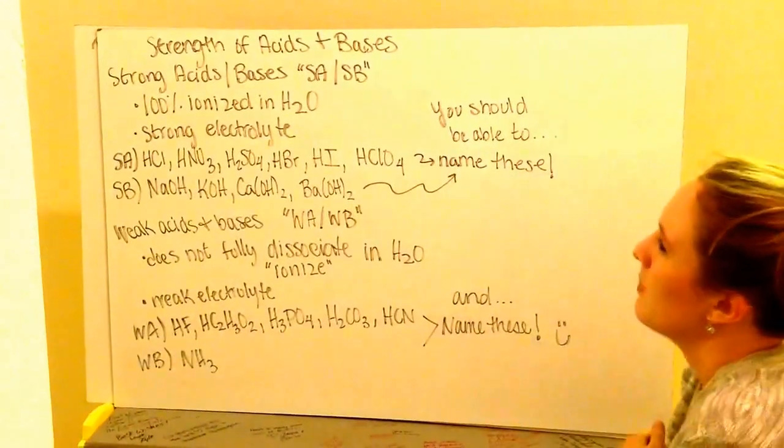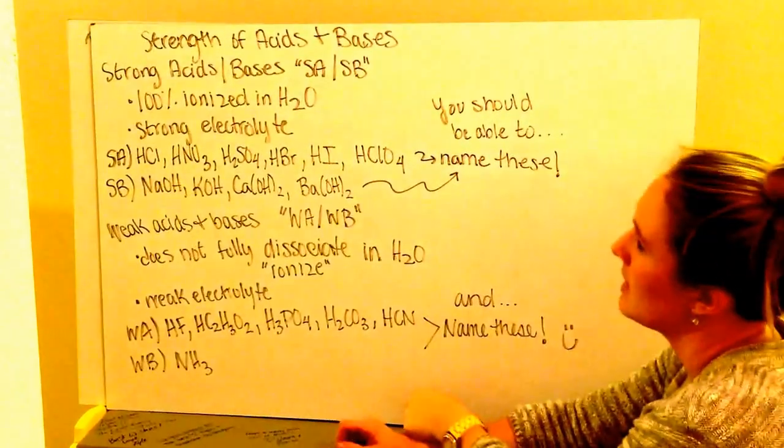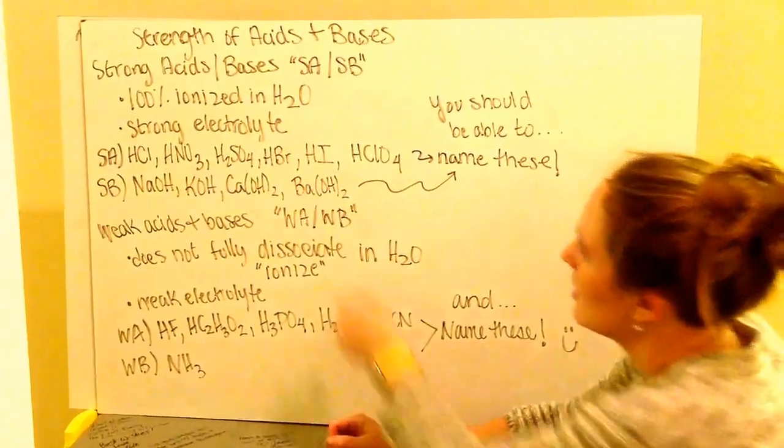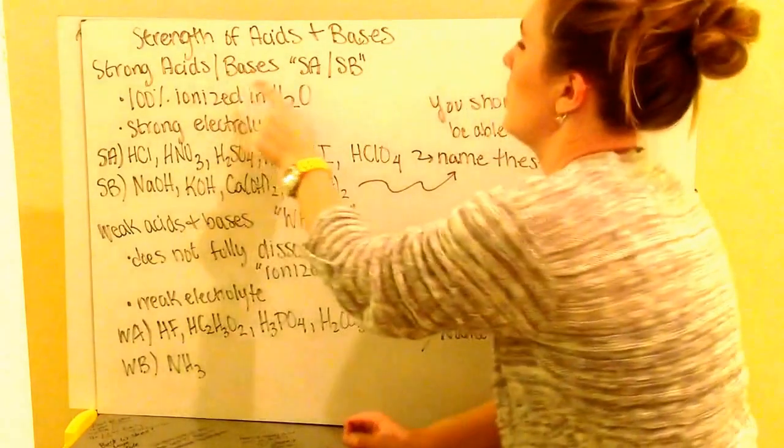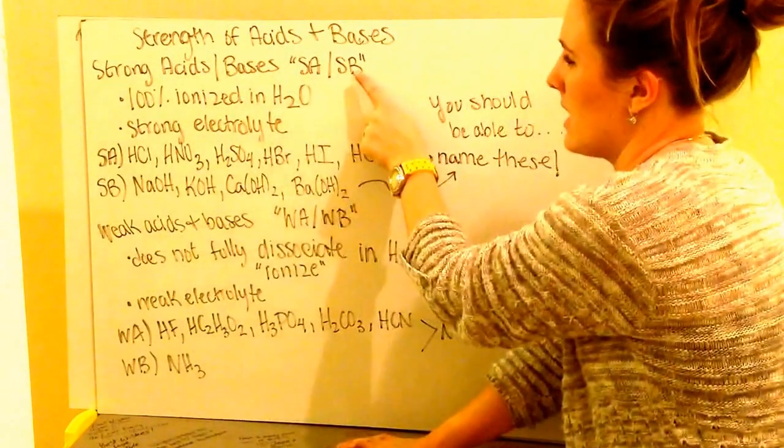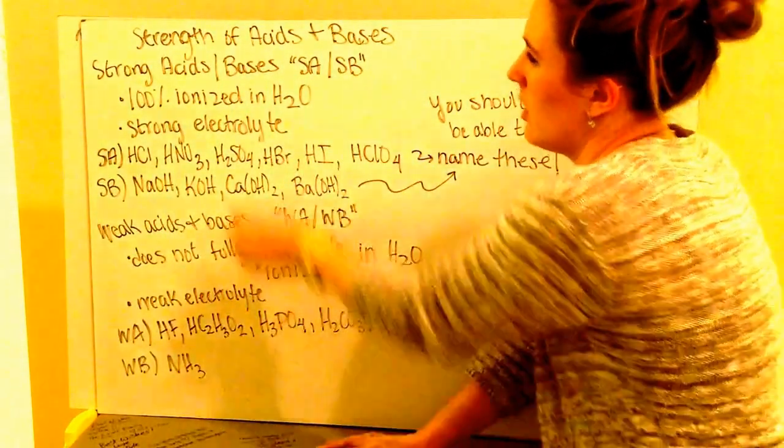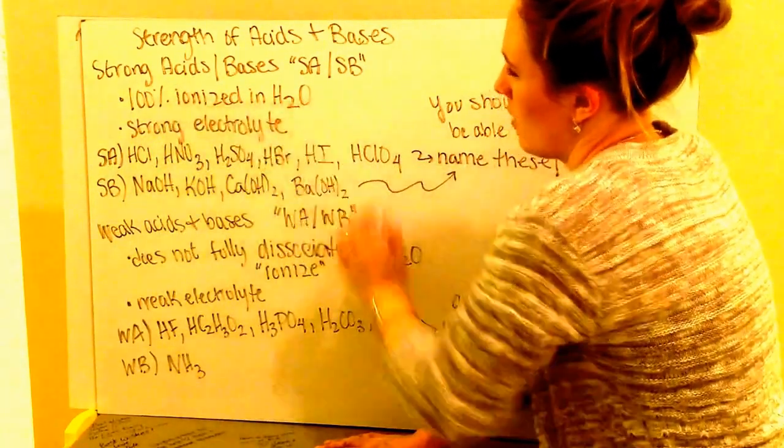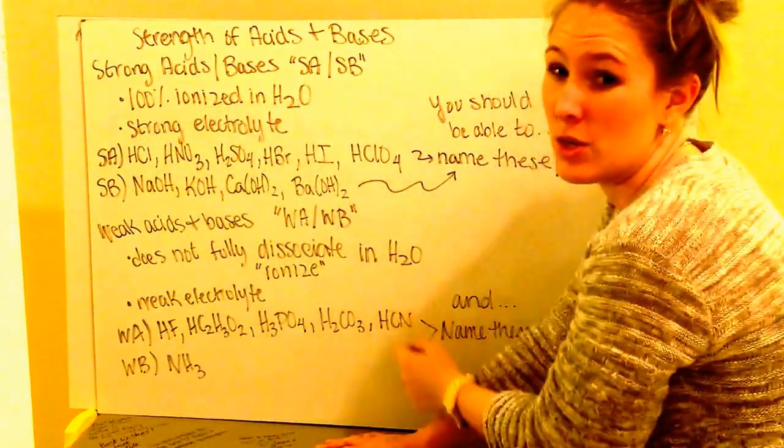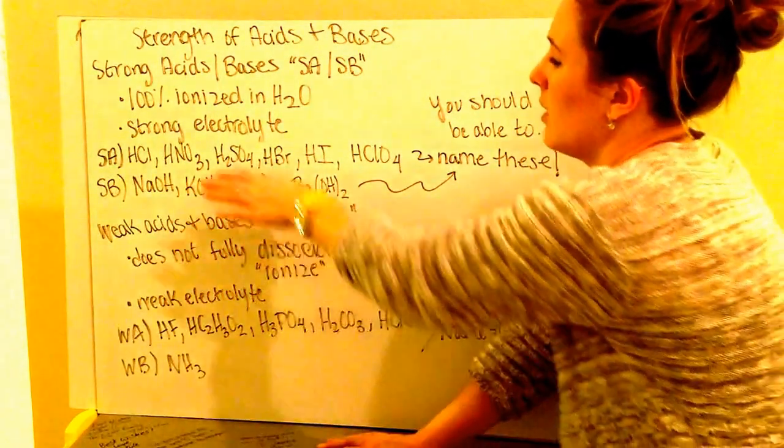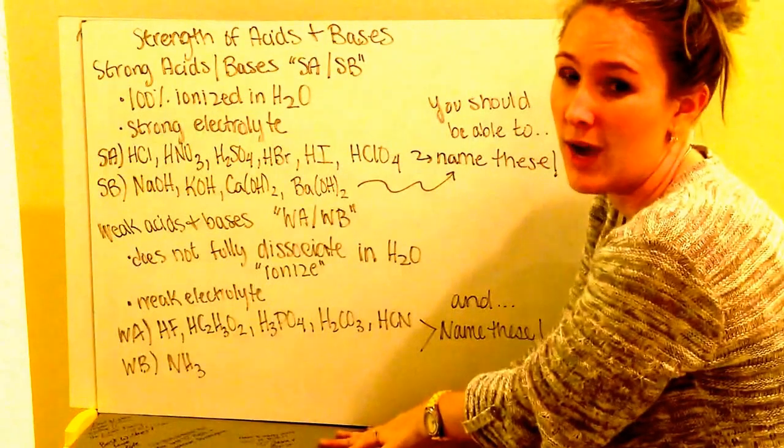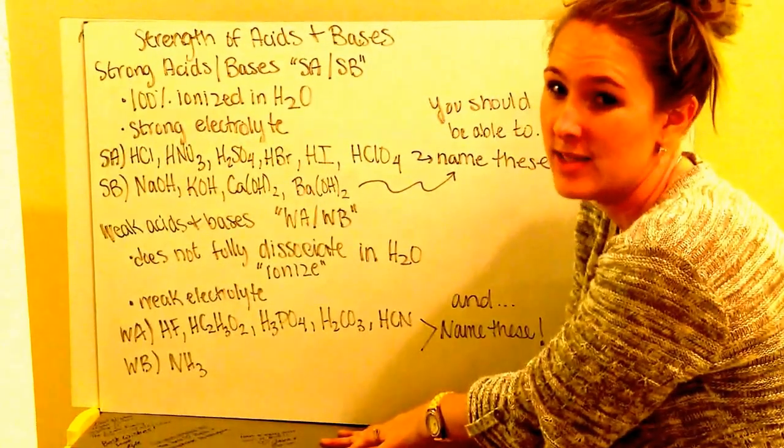The last part is the strength of acids and bases. We could have strong acids and bases or weak acids and bases. Strong acids and bases, we'll abbreviate as SA or SB, as for strong. Strong acids and bases are going to be 100% ionized in water or 100% dissociated in water. And they're going to be strong electrolytes. So because their dissociation is so high, they're going to have the most amount of ions in solution.